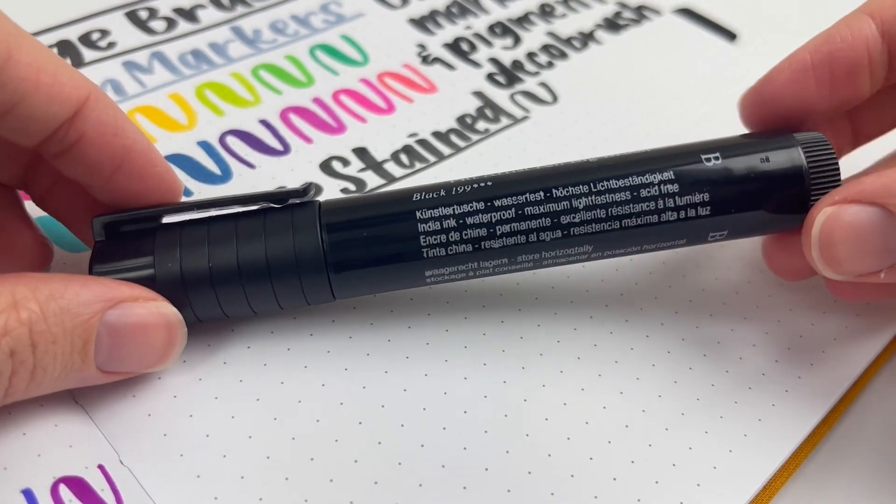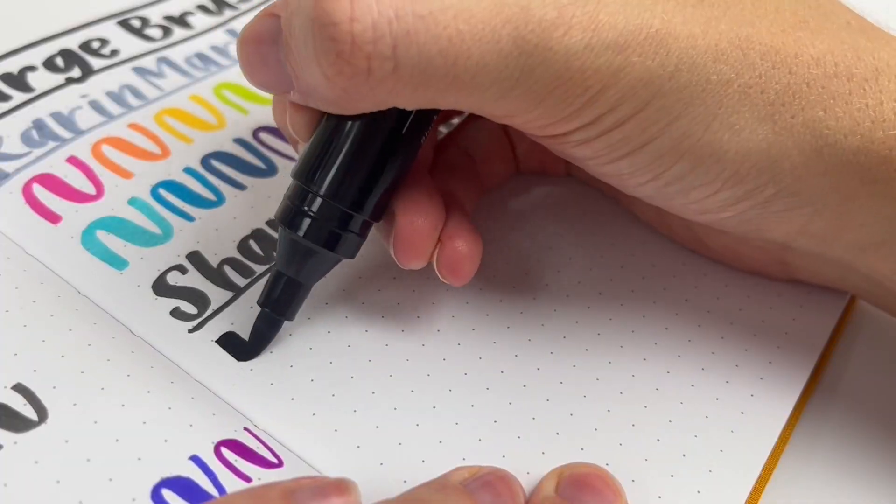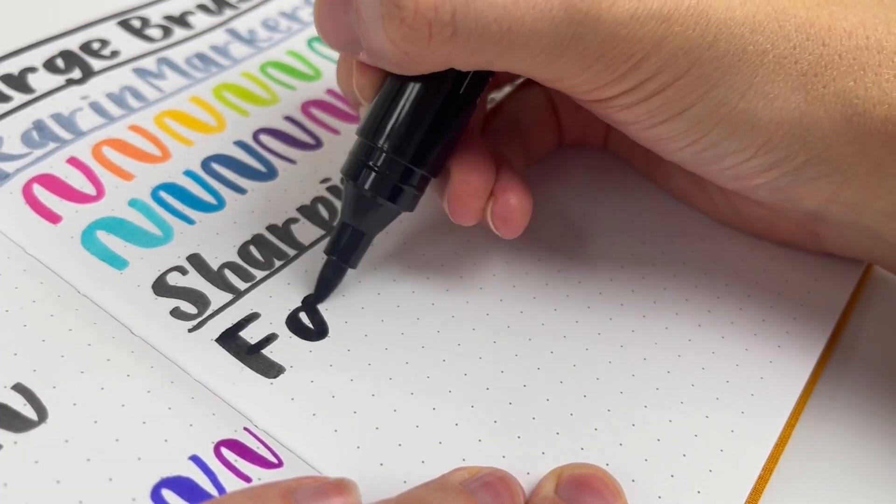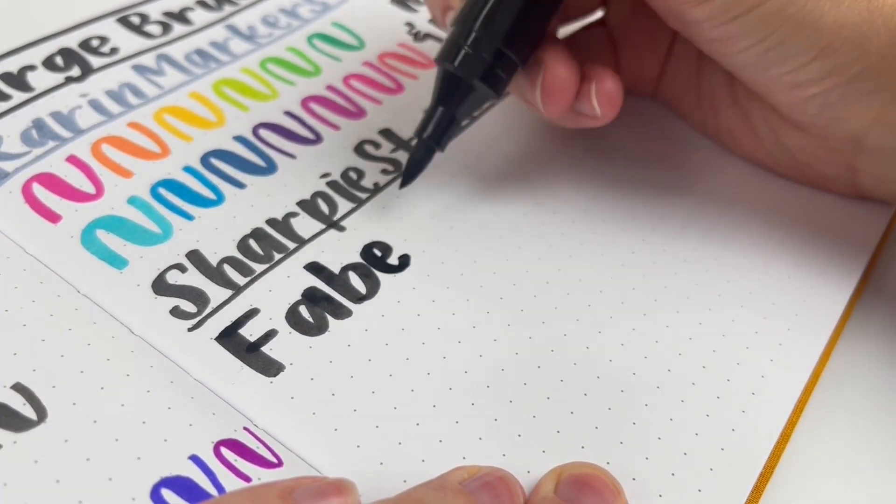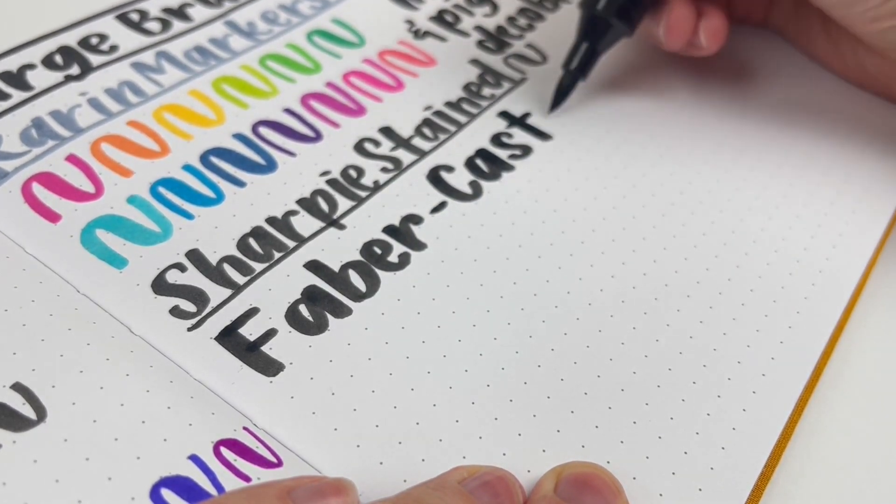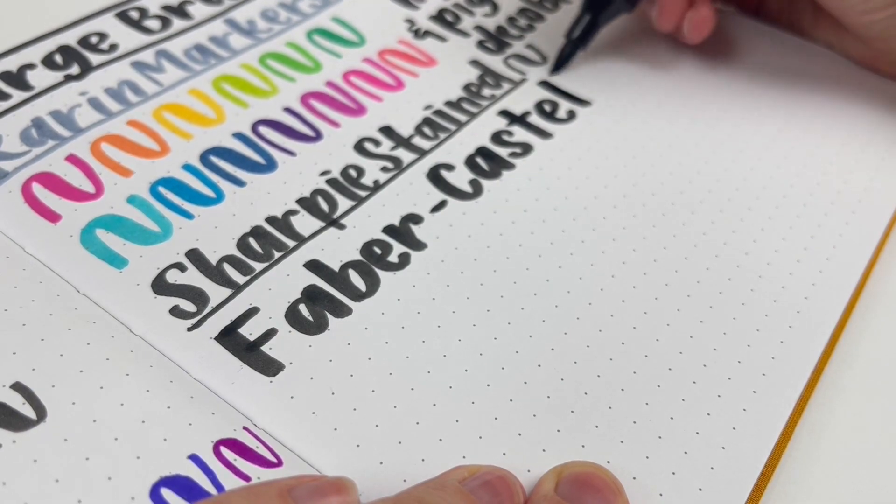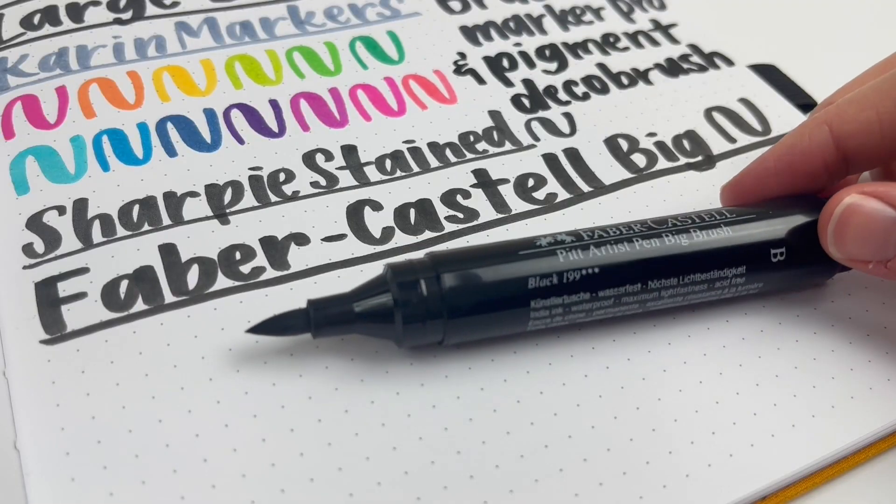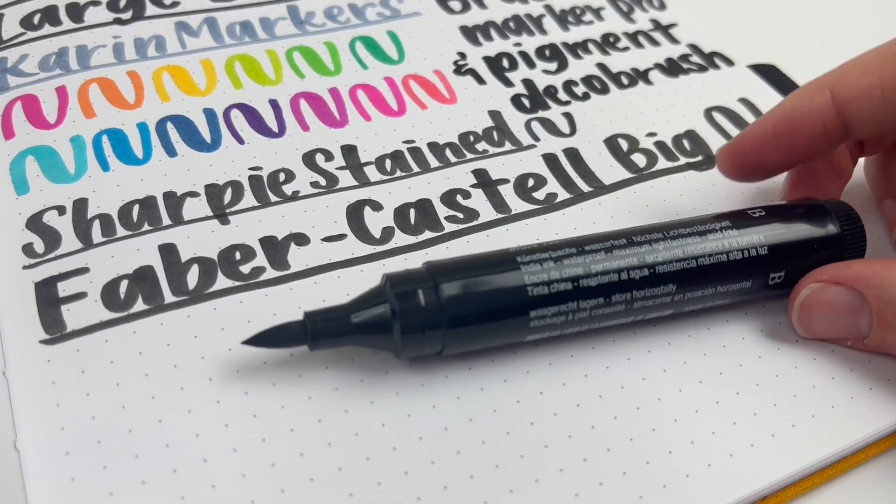Next is the Faber-Castell Big Brush Pen. I got this in black just to try it, but I honestly like the regular Faber-Castell brush pens better. This brush tip is good, but it's not as bouncy. But I am keeping it because it's one of my few waterproof large brush pens.